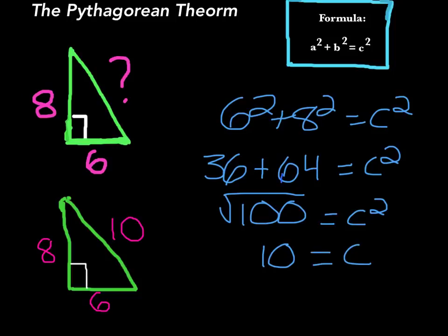The sides of the triangle are 6, 8, and 10. Thank you, this has been Finding the Missing Hypotenuse of a Right Triangle using the Pythagorean Theorem formula.